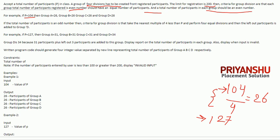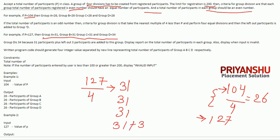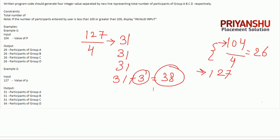If the number is odd, for example 127, you divide by 4 to get 31. So three groups have 31 members each, and the remaining members go into the last group. The last group will have 31 plus the 3 remaining, making 34 members total. That's the explanation for the odd number case.